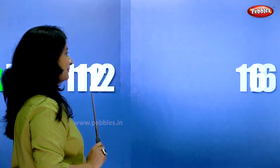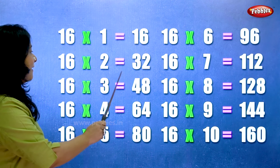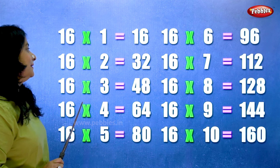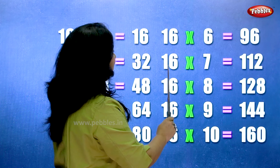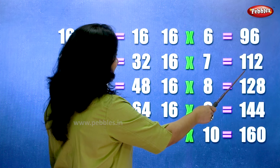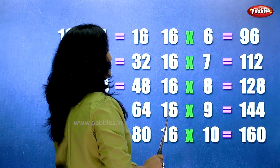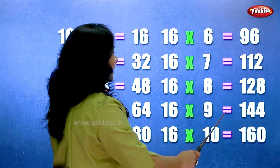Let's learn the table of sixteen one more time. Sixteen ones are sixteen. Sixteen twos are thirty-two. Sixteen threes are forty-eight. Sixteen fours are sixty-four. Sixteen fives are eighty. Sixteen sixes are ninety-six. Sixteen sevens are hundred and twelve. Sixteen eights are one twenty-eight. Sixteen nines are one forty-four. Sixteen tens are one sixty.